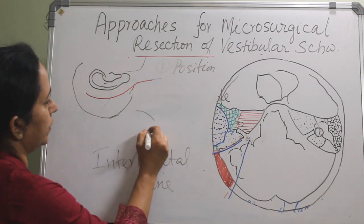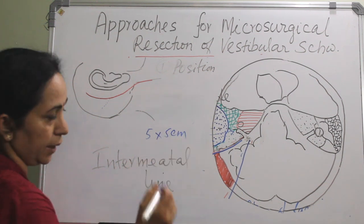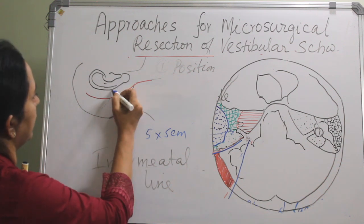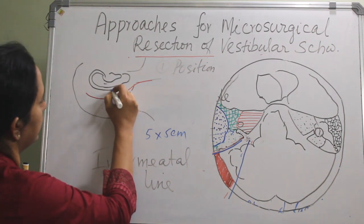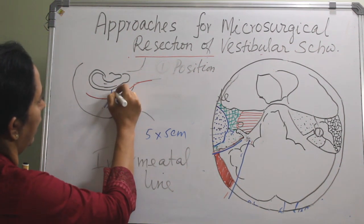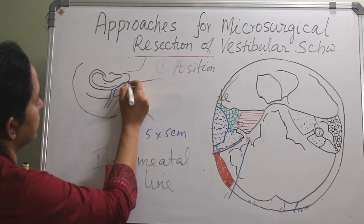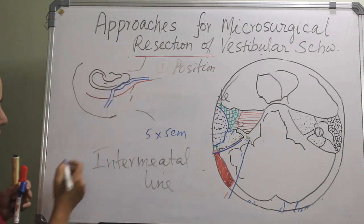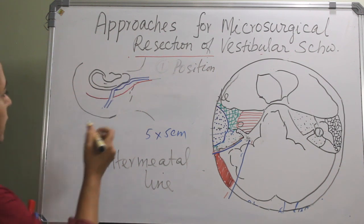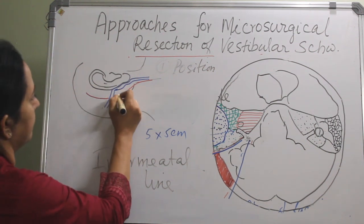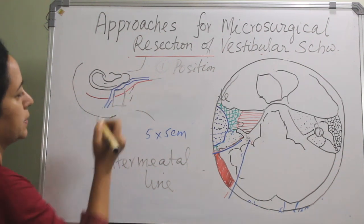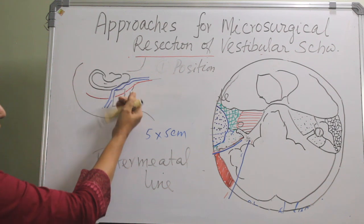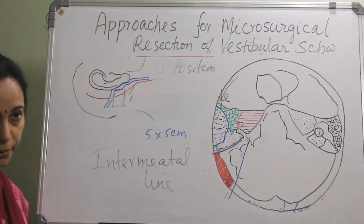After the incision, a 5 x 5 cm suboccipital craniotomy is performed. The transverse sinus will be the upper limit and the sigmoid sinus will be the anterior limit, so approximately the craniotomy will come in that region.